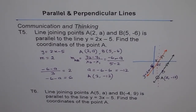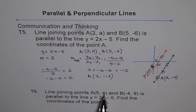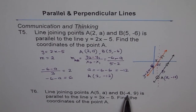Question T6 is for you to solve: the line joining points A(5, a) and B(-4, 9) is parallel to y = 3x - 5. Find the coordinates of point A. The x-value is given; you need to find the y-value. The given line has slope 3, so write (y2 - y1)/(x2 - x1) = 3 and solve for a. All the best!